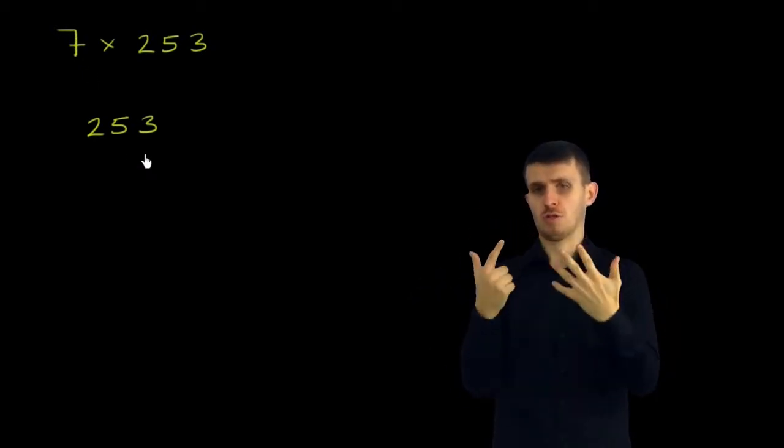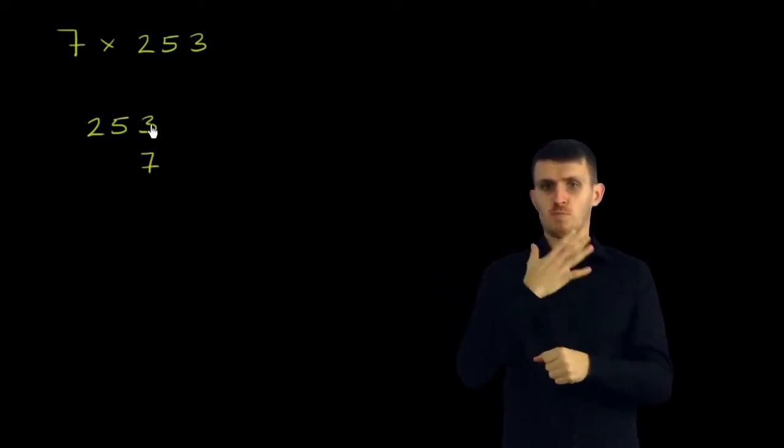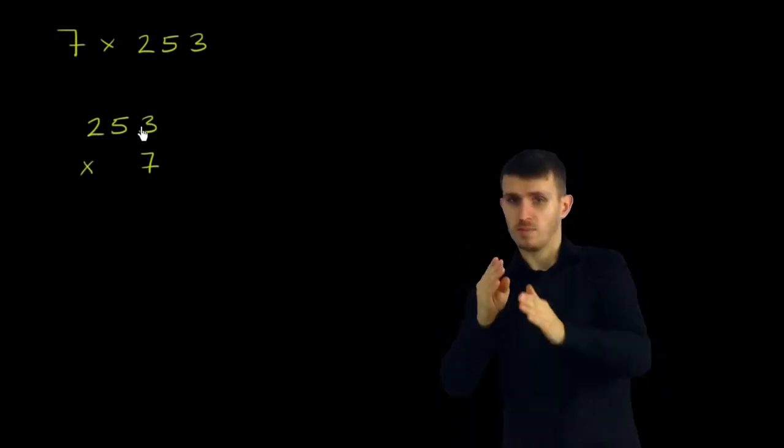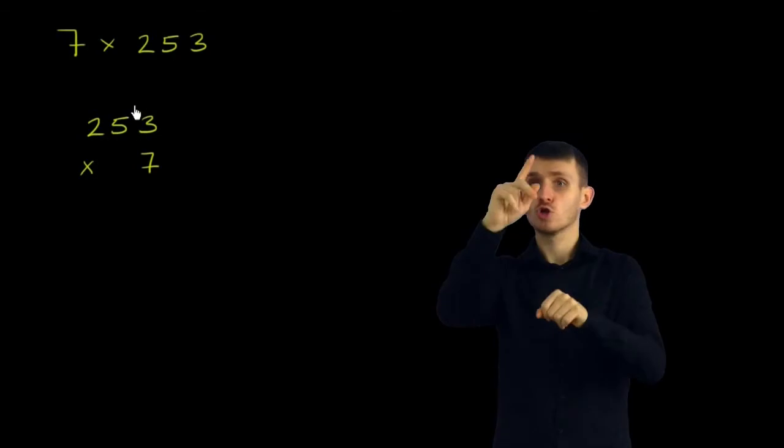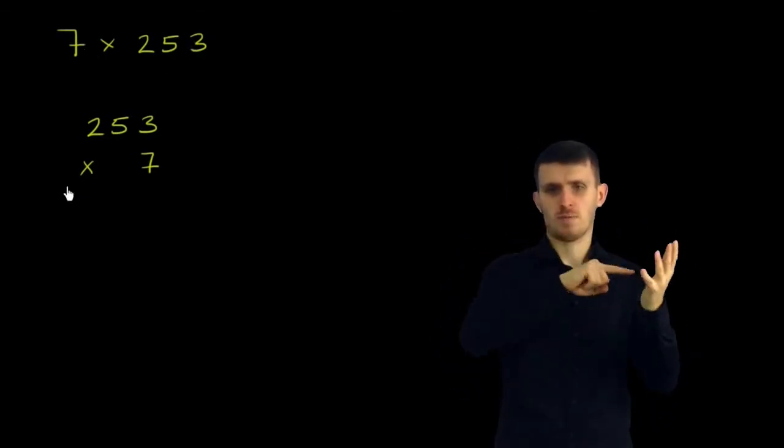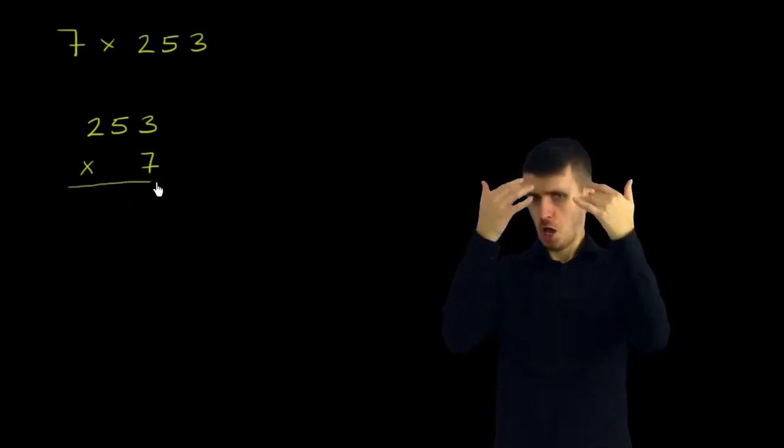And then write the smaller number below it and align the place value, the 7. It only has a ones place, so I'll put the 7 right over here below the ones place in 253. And then put the multiplication symbol right over here. So you could read this as 253 times 7, which we know is the same thing as 7 times 253.